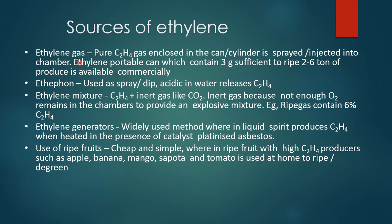Sources of ethylene. Ethylene gas: pure ethylene gas enclosed in a can or cylinder is sprayed or injected into the chamber. An ethylene portable can containing 3 grams is sufficient to ripen 2 to 6 tons of produce, and is available commercially. Ethylene is also used as a spray or dip. Acidic solutions in water release ethylene. An ethylene mixture plus an inert gas like carbon dioxide is used — the inert gas ensures not enough oxygen remains in the chamber to create an explosive mixture. For example, ripe gas contains 6% ethylene.